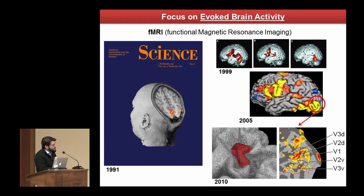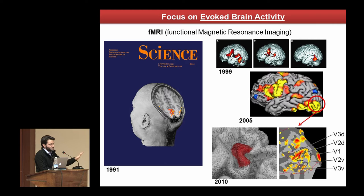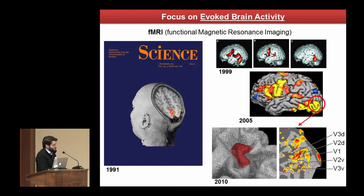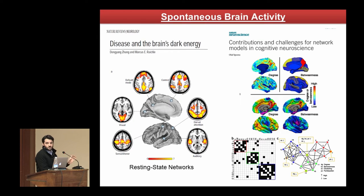A lot has been done in terms of increasing the spatial accuracy of this technique. Today, instead of having rough estimates of activity, we can decompose the occipital cortex in different patterns and see the activity of different layers in the cortex. But the problem is that here we are still focusing on the activity of the brain. What has really changed in the last 10 years in modern neuroscience is the focus of attention — we are now also looking at spontaneous brain activity.